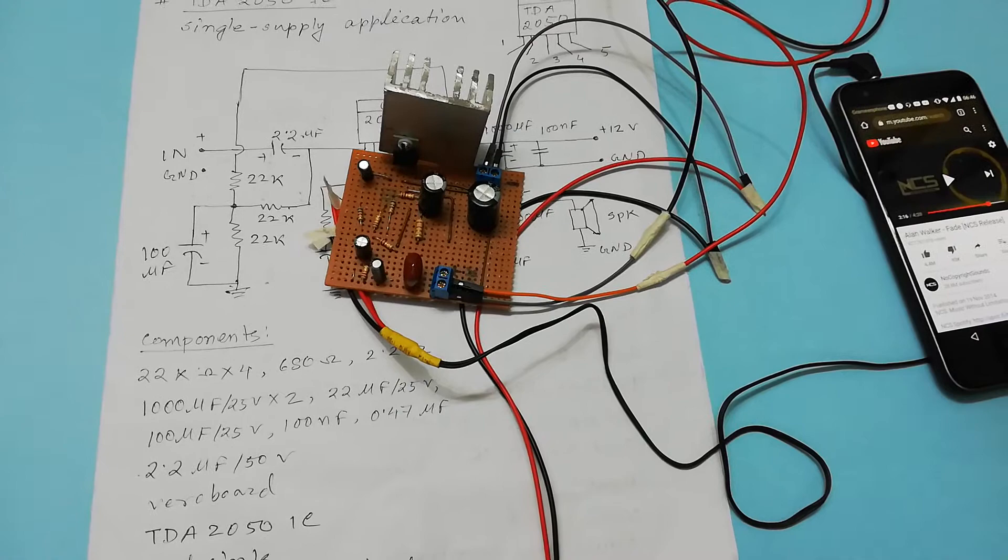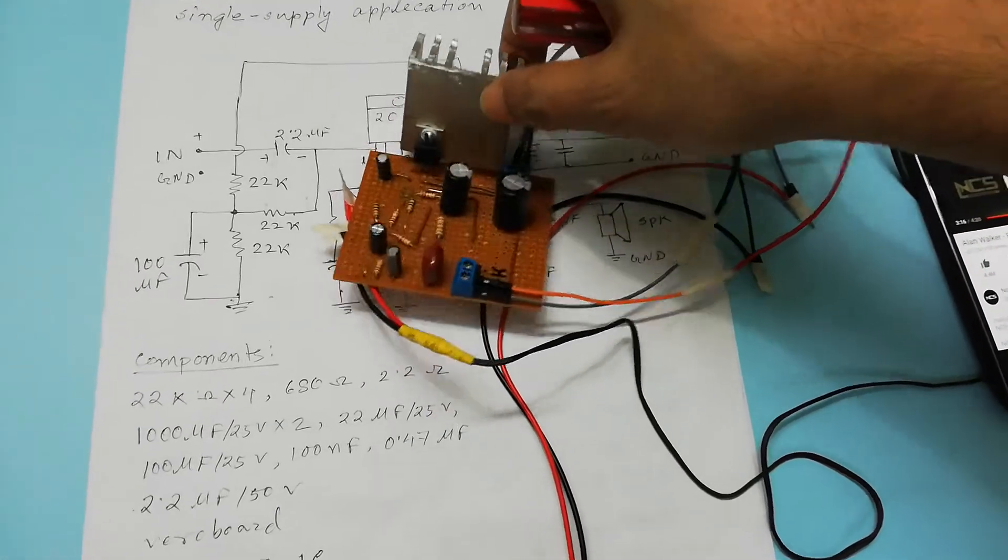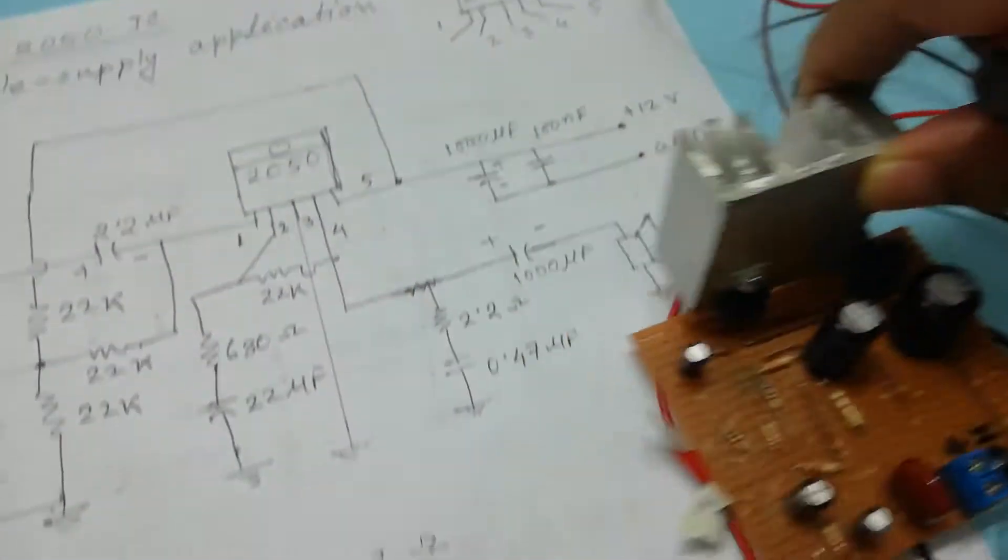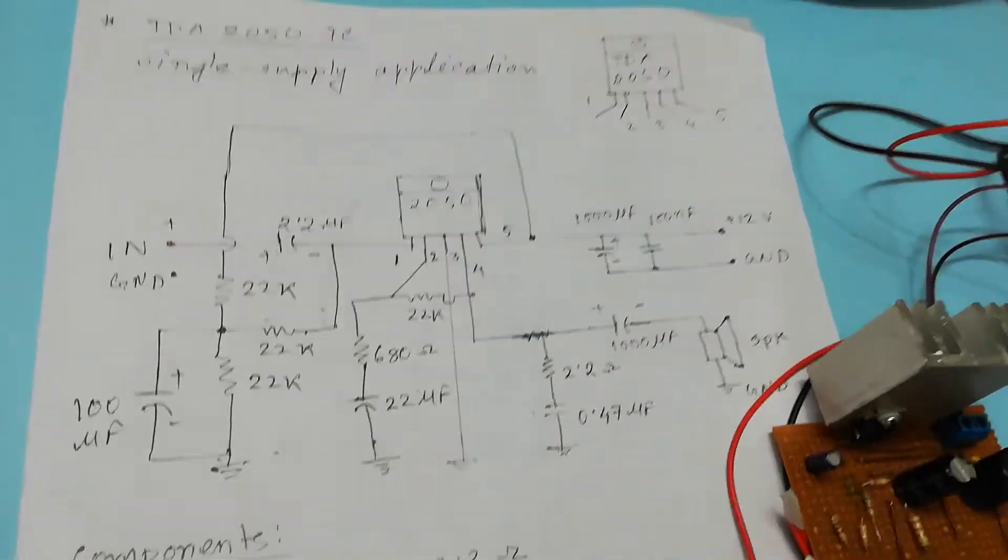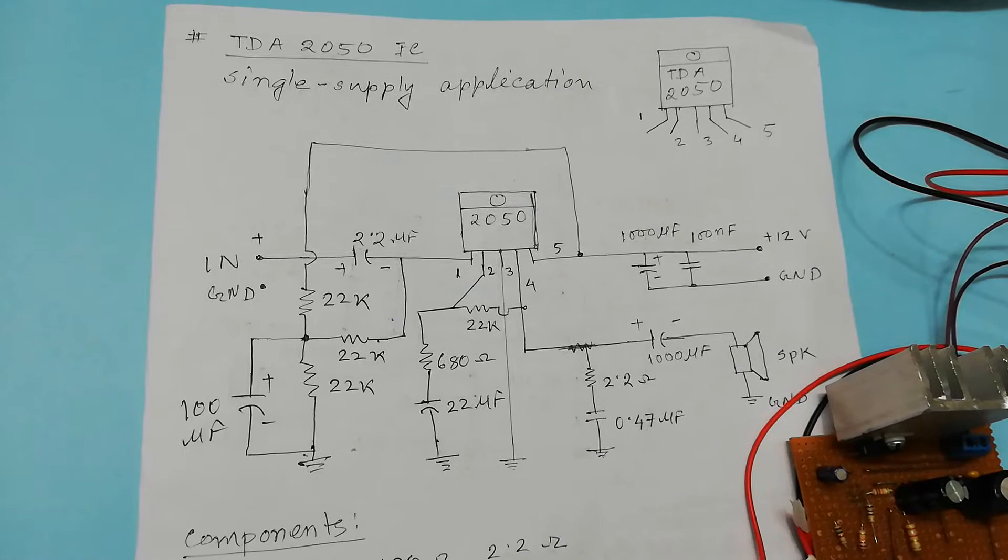So in this case I soldered all the components into the Vero board and this is the circuit that I soldered here, and this is the circuit diagram that I used to construct this amplifier.